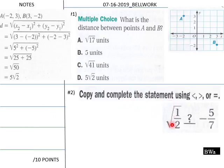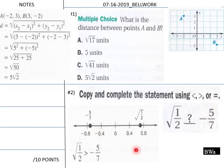And then down here, copy and complete. What do we have here? Square root of one-half is what in relation to negative five-sevenths? It's greater than. You bet you it is. Negative five-sevenths way over here. Here's square root of one-half.